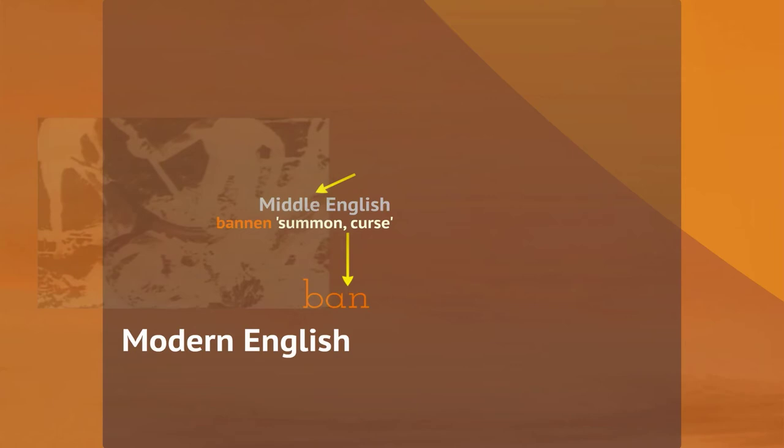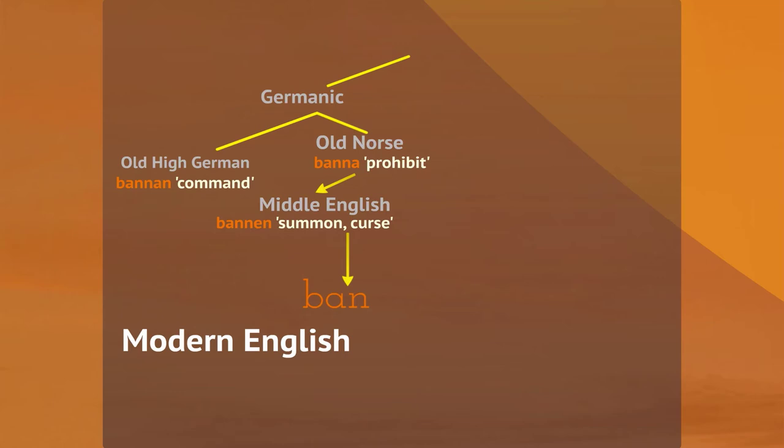The verb 'ban' is one of the words of English whose roots can be traced way back in time. In Old English it meant to summon or curse, and it originated as a word starting with a B sound in a language known as Proto-Indo-European — which had not only English as a descendant, but also Norwegian, German, Latin, Greek, and Hindi, to name just a few.